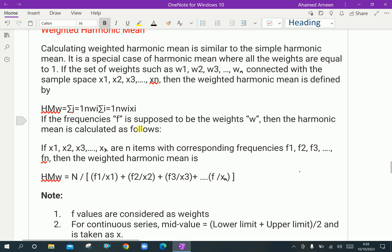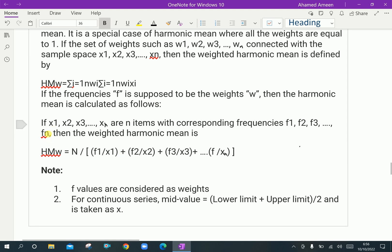If the frequencies F is supposed to be the weights W, then the harmonic mean is calculated as follows. Here, that is X1, X2, X3 up to Xn are n items with the corresponding frequencies F1, F2, F3 up to F over Xn.